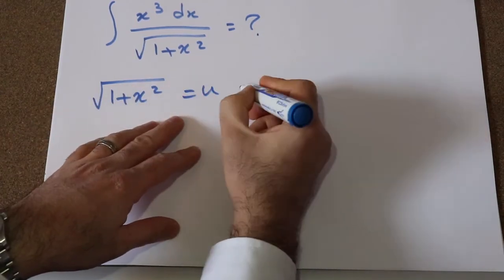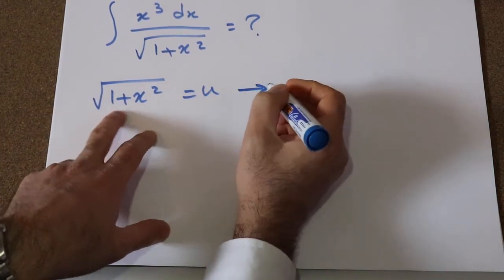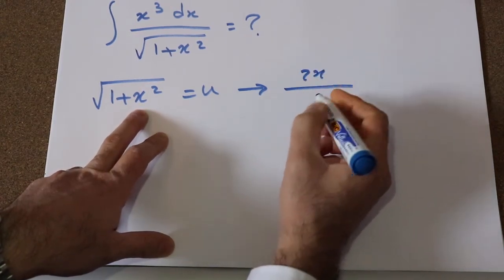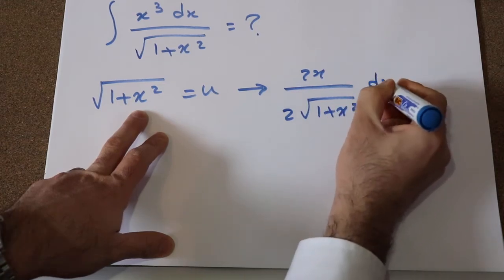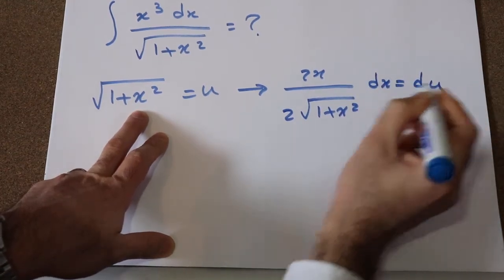and if you take the derivative from each side of this equation, that one will be equal to 2x divided by 2 square root of 1 plus x² dx will be equal to du. Okay,